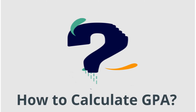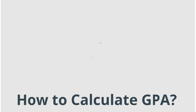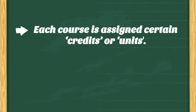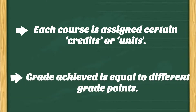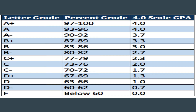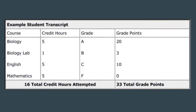Now comes the question: how to calculate GPA? Each course is assigned certain credits or units depending on the complexity of the subject and how credits are assigned. The grade achieved is equivalent to different grade points. Here is the table containing the grades with their equivalent grade points.